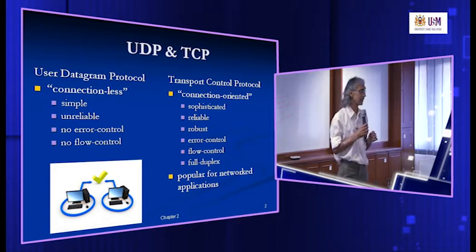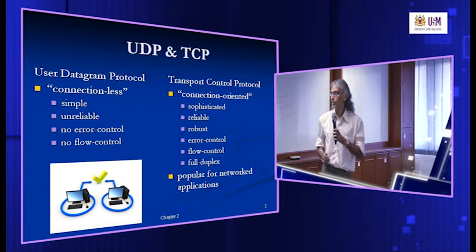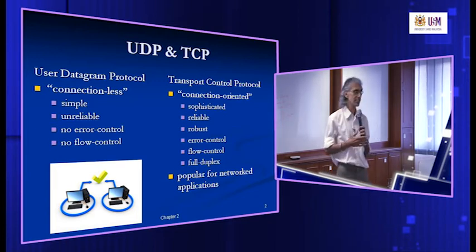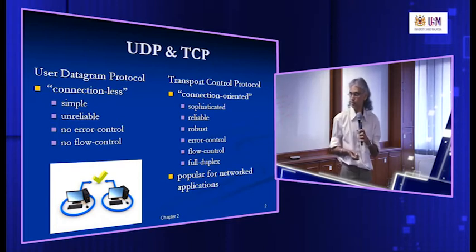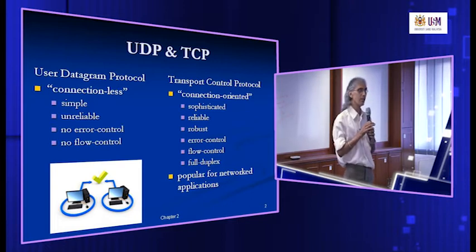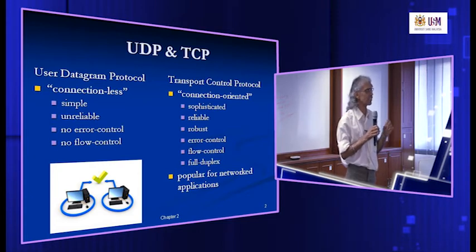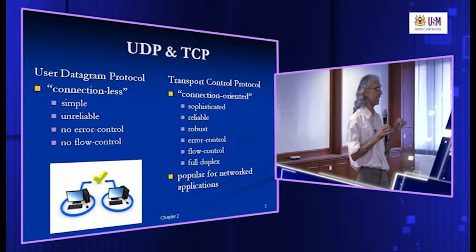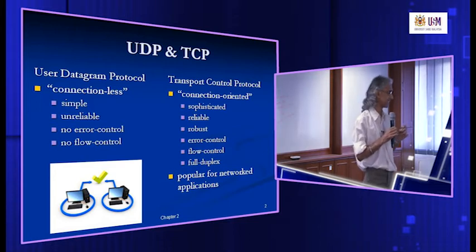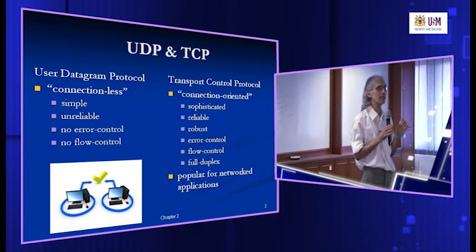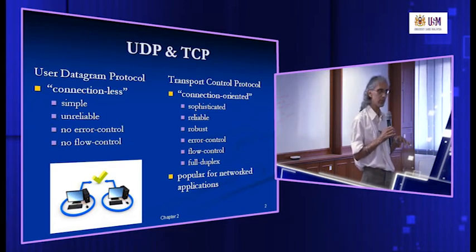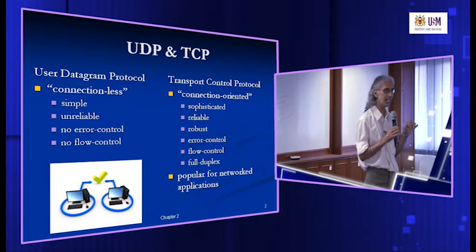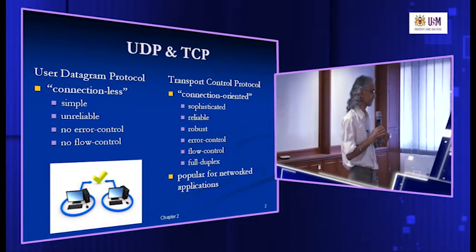TCP gives you a higher level of service — we call it connection-oriented. It is reliable, robust, with error control, flow control, full duplex, and sophisticated. Before TCP tries to connect to the other side, it must check whether the server exists. If the client is using a TCP socket to connect to the server, the client will need to check whether the server exists. If there's no such server, you cannot connect — the socket will not even be created. Over time, it will also do error control, congestion control, and flow control, making sure messages exchanged between client and server can be handled by the other side without overflow.